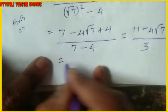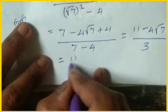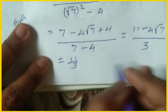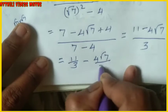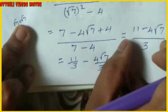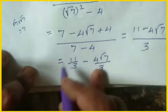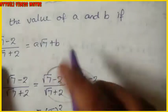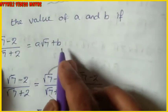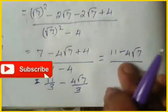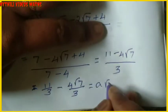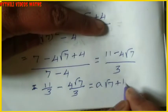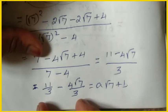Now split the fraction: (11 − 4√7) / 3 = 11/3 − (4/3)√7. This can be written as (−4/3)√7 + 11/3. The right-hand side of the original equation is a√7 + b, so we equate the two expressions.